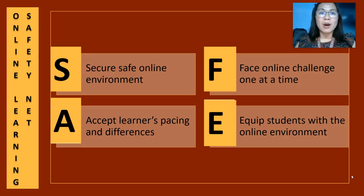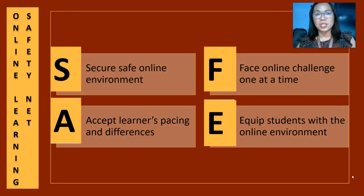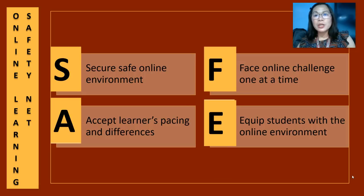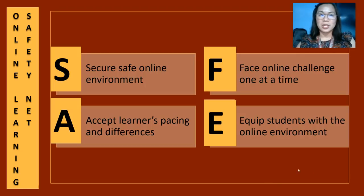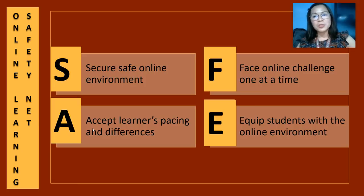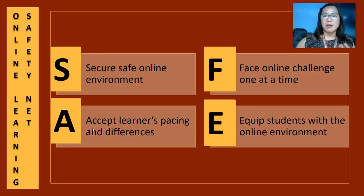S is for a Secure, safe online environment — by setting privacy agreements and confidentiality, we cannot just post students' responses without their permission, especially if they have wrong responses. We must be keen on giving constructive feedback to avoid embarrassment, and also check comments that may be destructive or offensive so we can instantly intervene. A is for Accept learners' pacing — give them thinking time. Some students are very vocal and respond quickly once a question is posted, but also consider shy students who would like to think their answers over before posting.